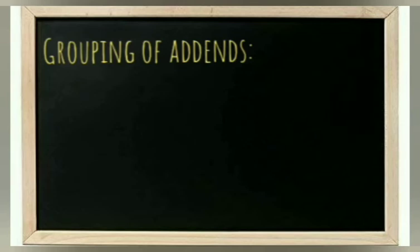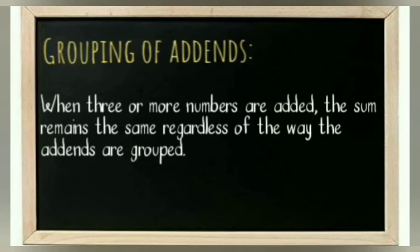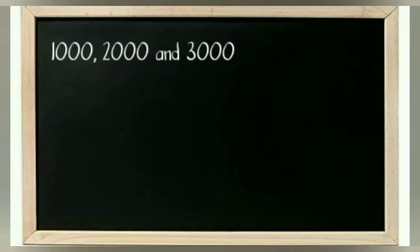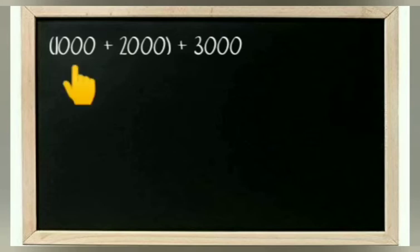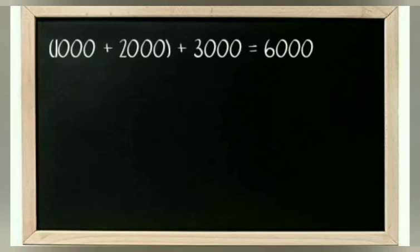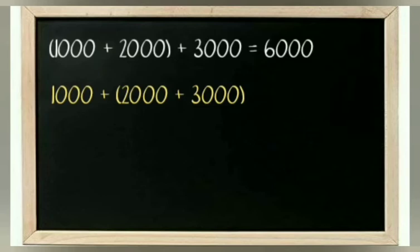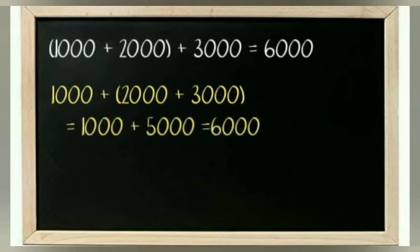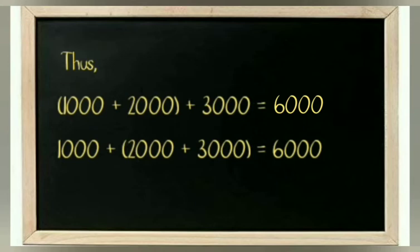The second property is the grouping of addends: when three or more numbers are added, the sum remains the same regardless of how the addends are grouped. For example, adding 1000, 2000, and 3000 — grouping 1000 and 2000 first gives 3000 plus 3000 equals 6000. Grouping 2000 and 3000 first gives 1000 plus 5000 equals 6000. The sum always remains the same.